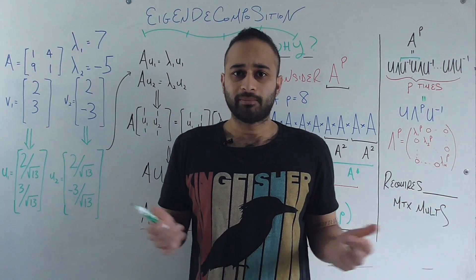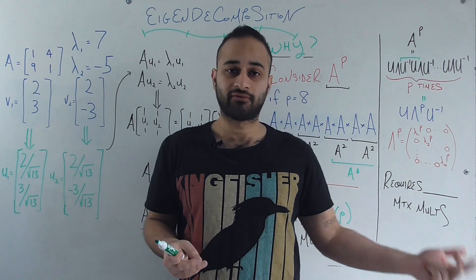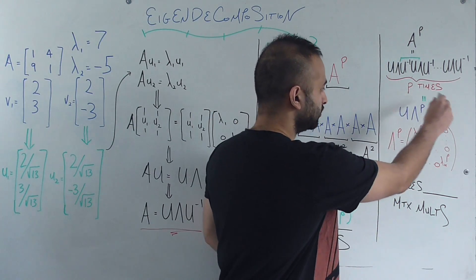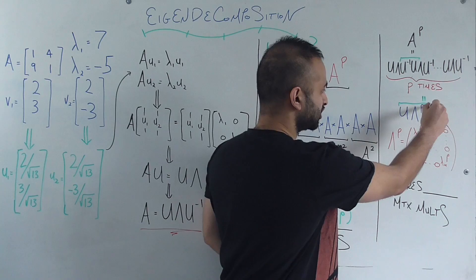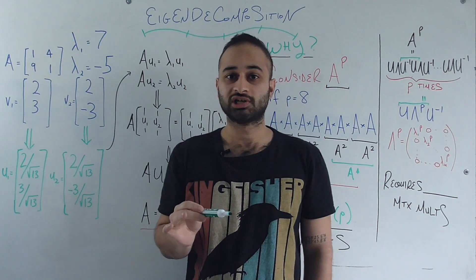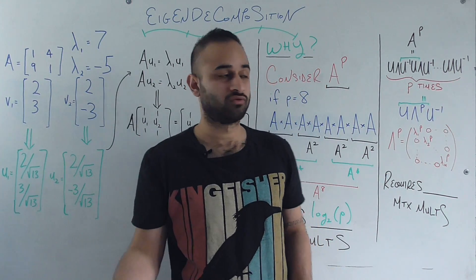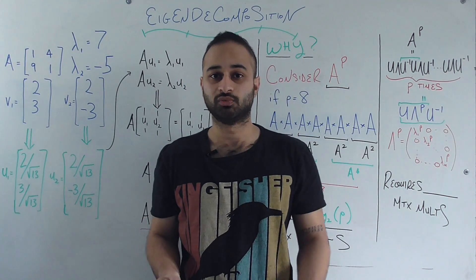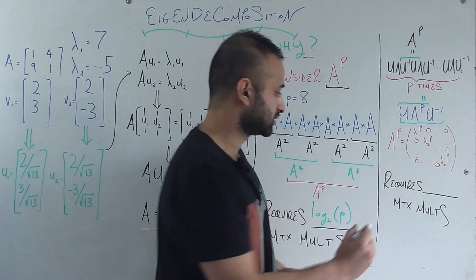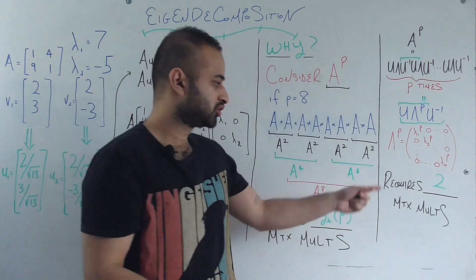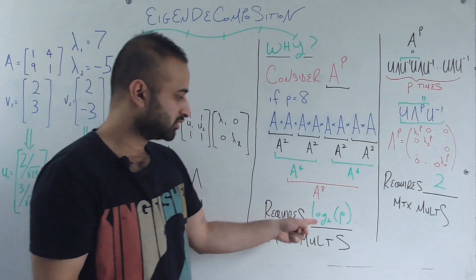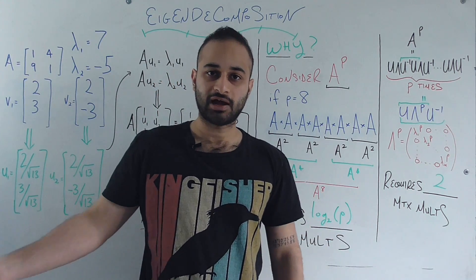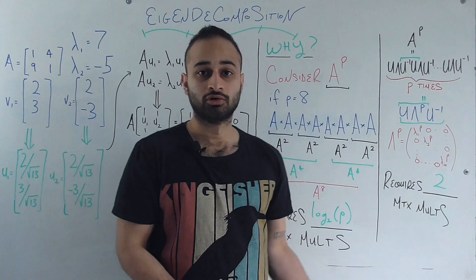Okay? So all that means that how many matrix multiplications do we actually have to do to get at our final result of A to the P? Well, we just have to compute this quantity, which means that we'll have to do one matrix multiplication for U times lambda to the P, and then one more matrix multiplication for the result of that with U inverse on the other side, which means we just have to do two matrix multiplications. So compare two matrix multiplications with log 2 to the power of P. As P gets very large, let's say something like a hundred or a thousand, this is going to be way, way, way bigger than two.